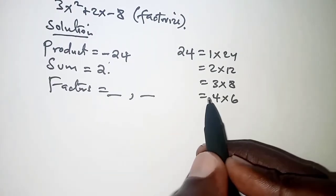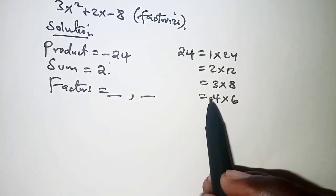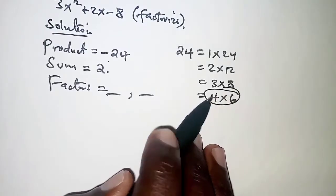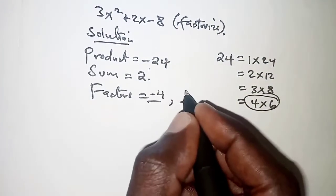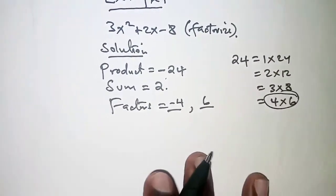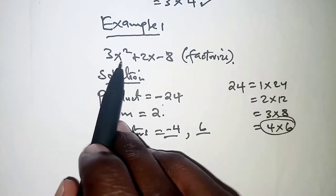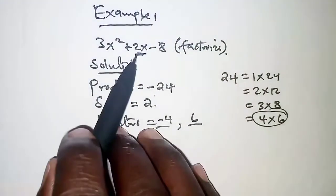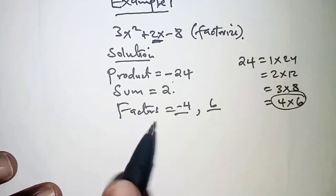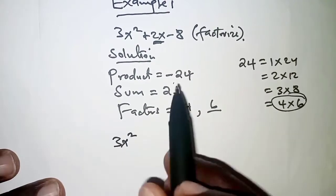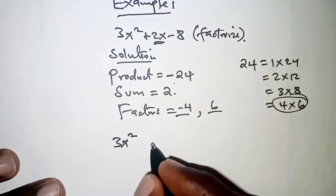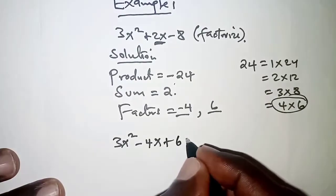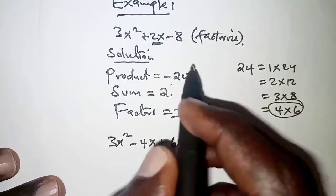When it comes to 4 and 6, that is possible — especially when we make 4 negative. Negative 4 plus 6 gives us 2, and negative 4 times 6 gives us negative 24. So our two factors are negative 4 and 6. We then come back to the expression and split 2x using these factors: 3x² − 4x + 6x − 8.